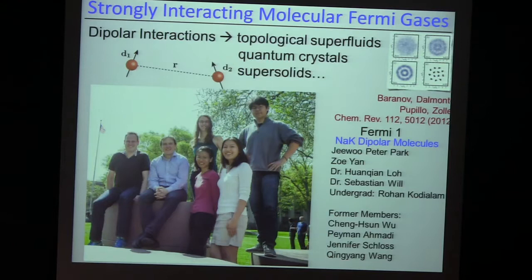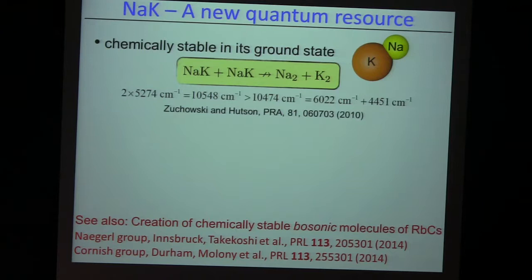Now I want to switch gears to the molecule side of the story, where we have created an ultra-cold gas of chemically stable fermions. The choice of the molecule — sodium potassium — is driven precisely by this chemical stability. If NaK meets another NaK, it cannot undergo a chemical reaction to form Na₂ plus K₂. It's simply energetically forbidden — that's the luck of nature.